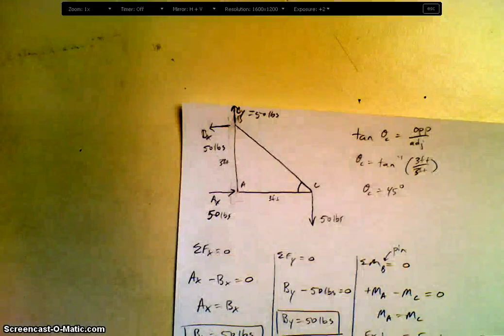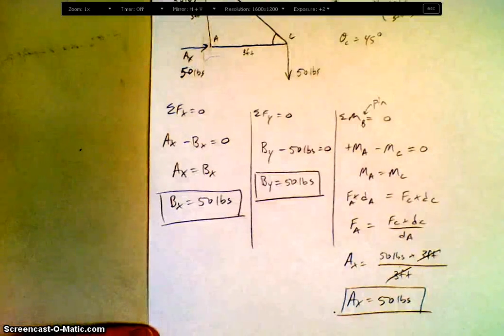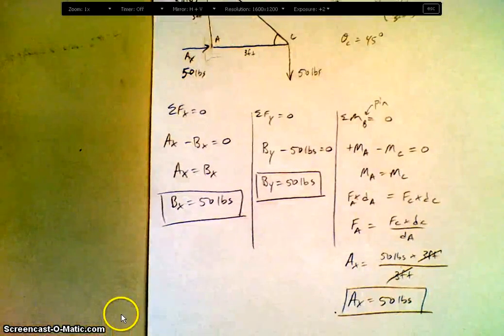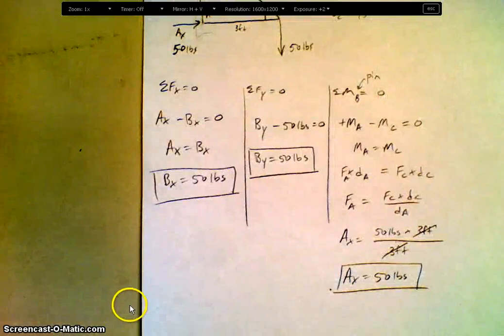And again, that earns you a C minus on this problem. You can click the next video, which will be the method of joints for this particular truss.